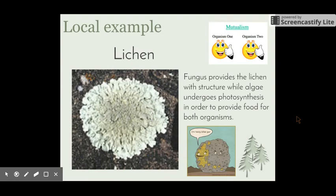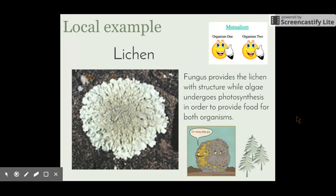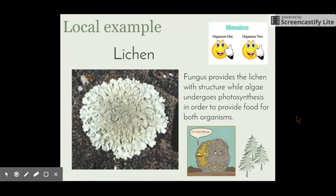A local example that we talked about on the excursion is lichen. In this relationship, fungus provides the lichen with structure while algae undergoes photosynthesis to provide food for both organisms. If the algae wasn't there, the fungus wouldn't get food because fungi can't produce their own food. And if the fungi wasn't there, the algae wouldn't have any structure and wouldn't be able to form the way that it does.